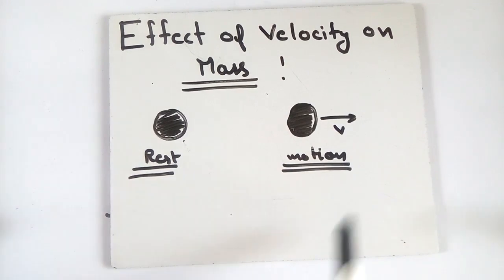Because in our everyday lives, things do not move very fast. But at higher speeds, as Einstein said, mass changes. As you go faster, the body gains more mass.